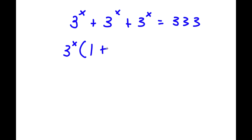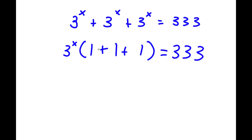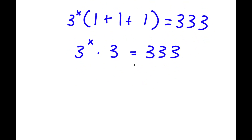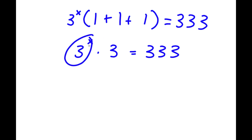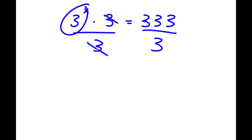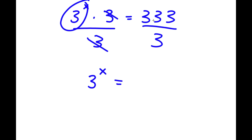So I have 3 to the power of x times (1 plus 1 plus 1) is equal to 333. Adding what's in the parentheses gives 3, so now I have 3 to the power of x times 3 is equal to 333. I want to isolate 3 to the power of x, so I divide both sides by 3. These two 3s cancel out and I'm left with 3 to the power of x is equal to 333 divided by 3, which is 111.